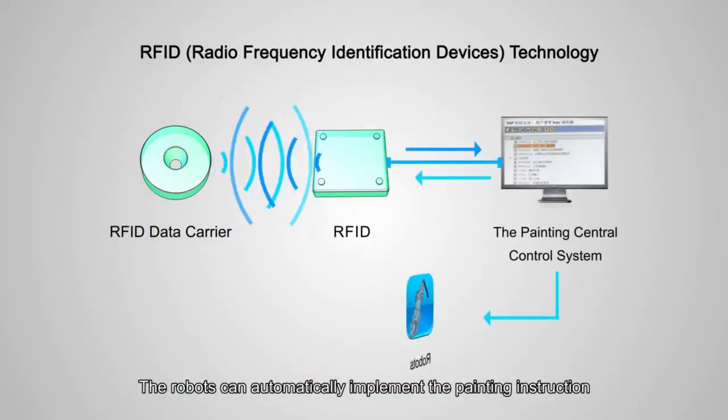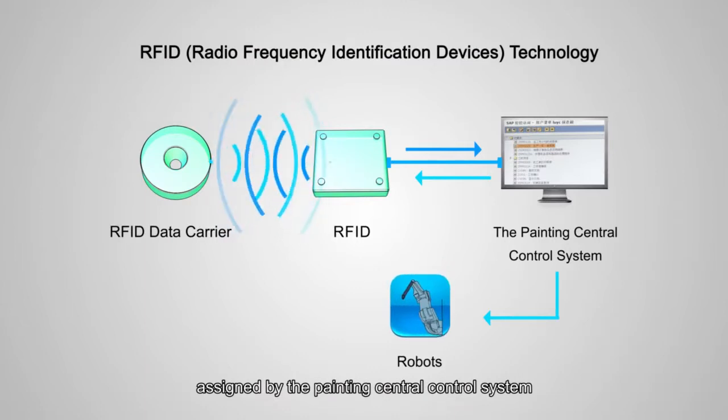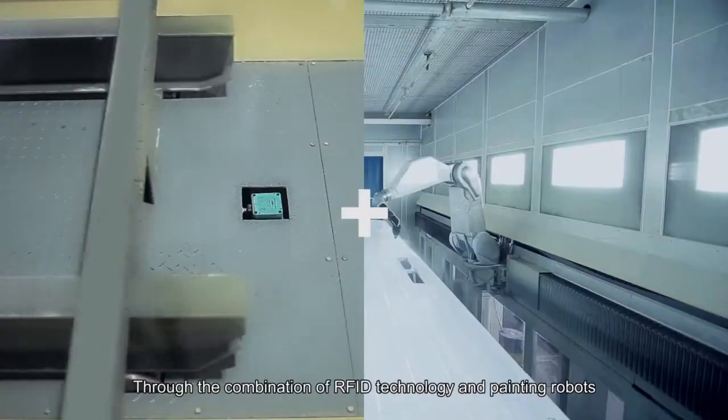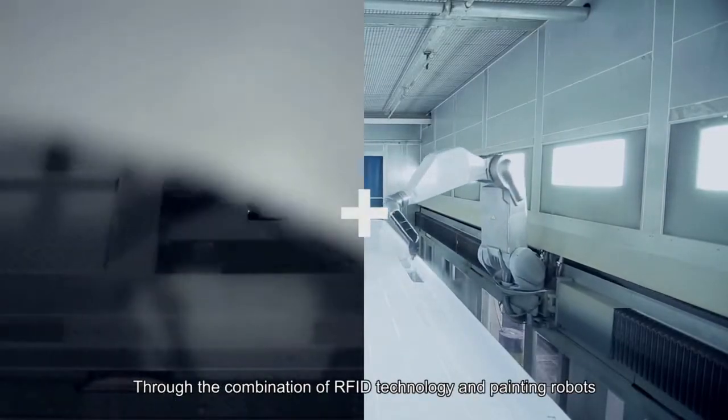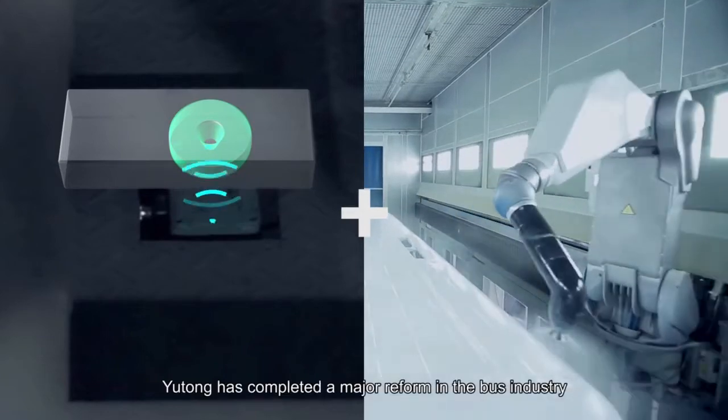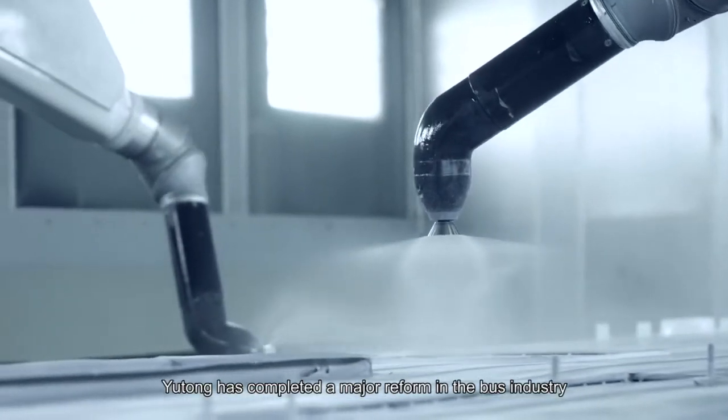The robots can automatically implement painting instructions assigned by the painting central control system by reading the corresponding painting data on the data carrier through RFID technology. Through the combination of RFID technology and painting robots, Yutong has completed a major reform in the bus industry.